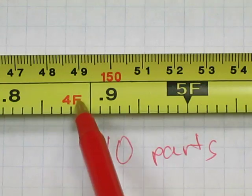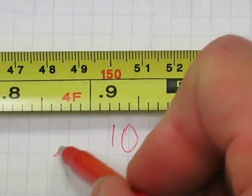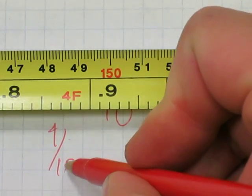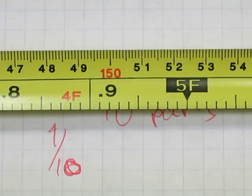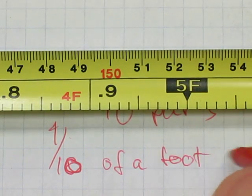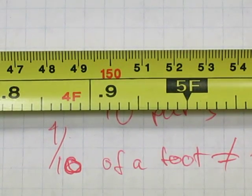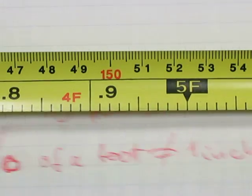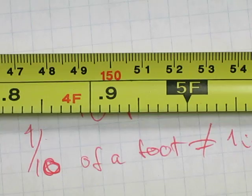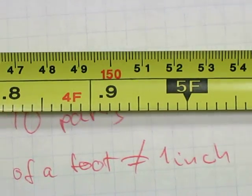So the length of one tenth, okay this is one tenth. The length of one tenth of a foot is not one inch because an inch is one twelfth of a foot and one tenth of a foot is not the same as one twelfth of a foot.